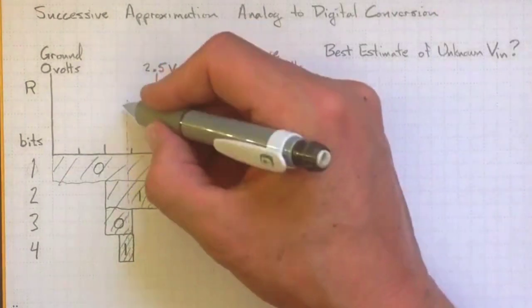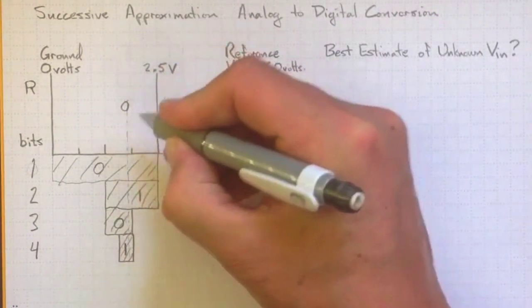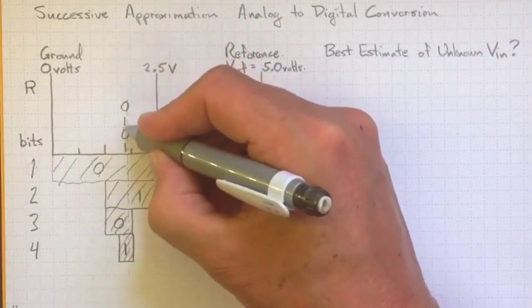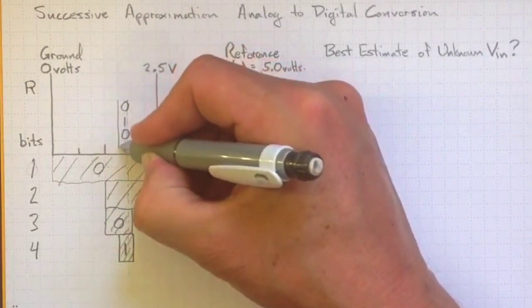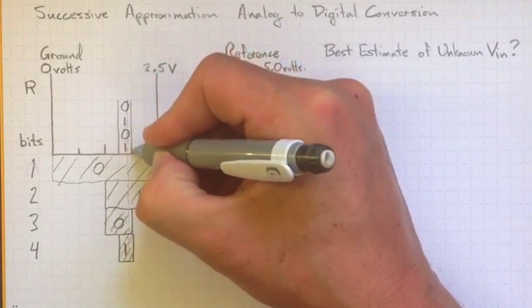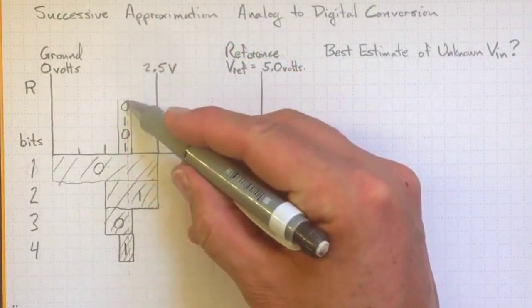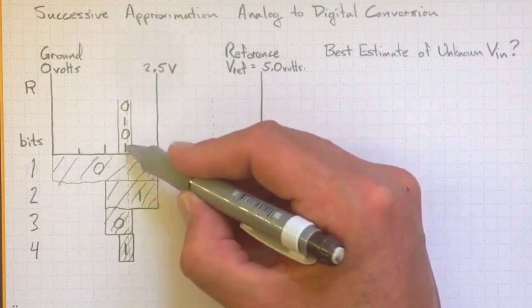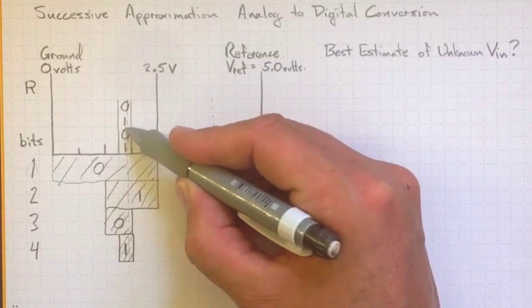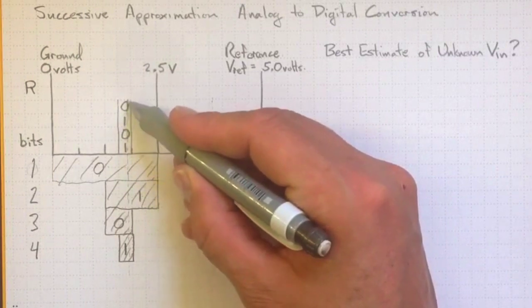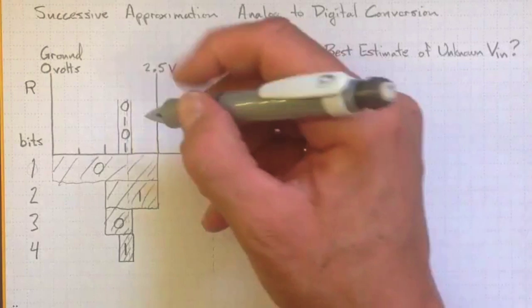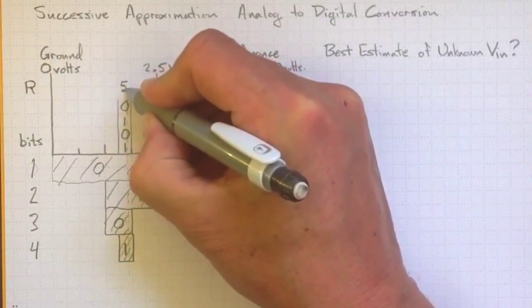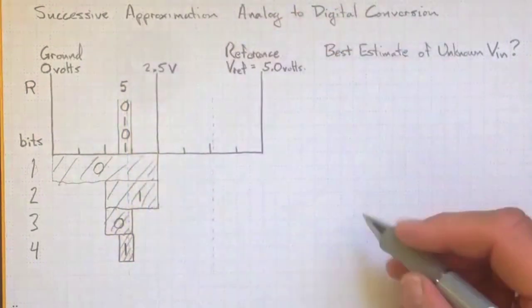And if we go up here, 0, 1, 0, 1 represents all of the voltages that lie between those two limits. And if we convert that from a binary number, 0, 1, 0, 1, well, that's 1 times 1 plus 0 times 2 plus 1 times 4 plus 0 times 8 is 5. So we've got a number representation of our voltage now.